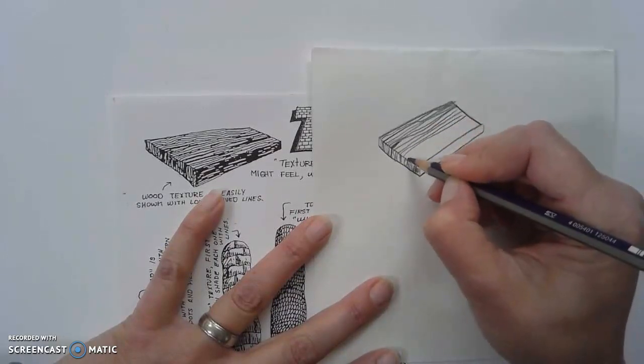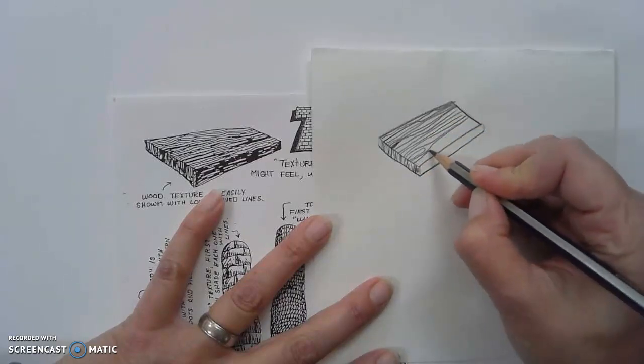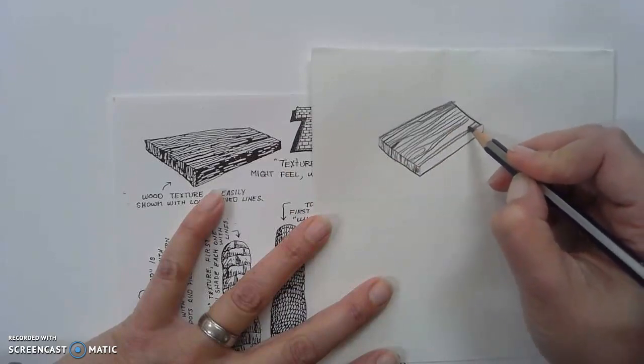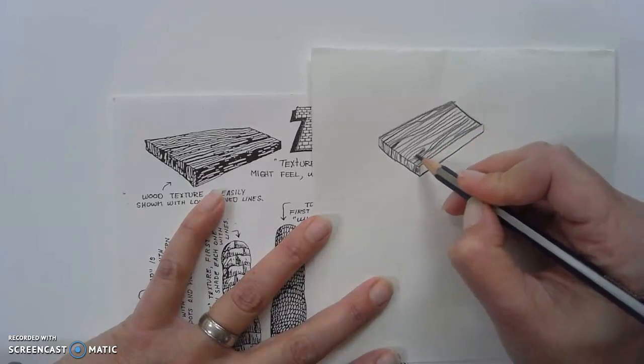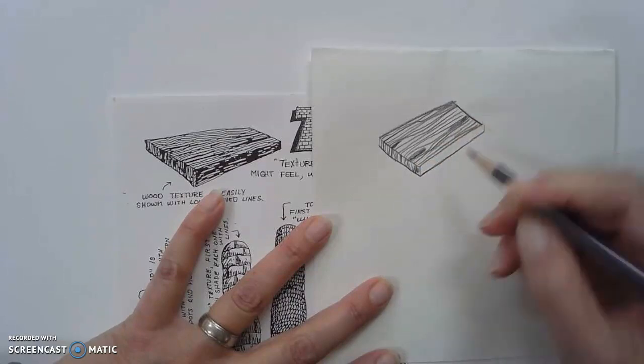And you could get all fancy if you wanted to. You could put a little knot in the wood there and work your way around it if you wanted to. Feel free with your creativity. It doesn't have to look exactly like that. And maybe we'll just shade in that little knot in the wood.